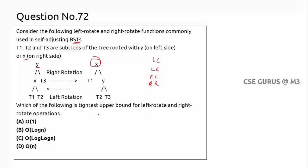Which of the following is the tightest upper bound for left-rotate and right-rotate operations? Whatever the subtree may be, rotations can be done in constant complexity. You don't need to traverse to the last node — the rotation happens right there. That's why the complexity is O(1).